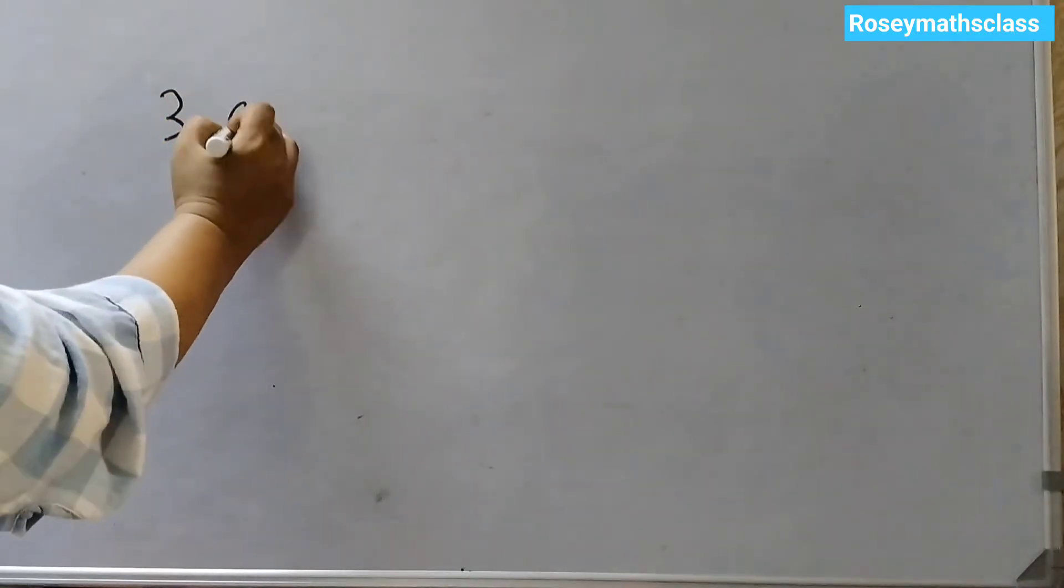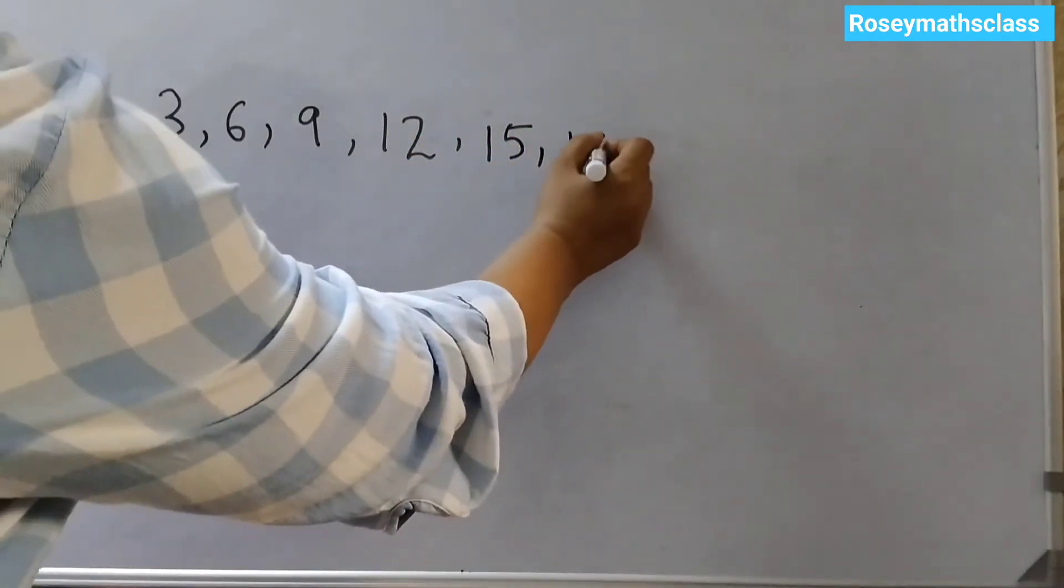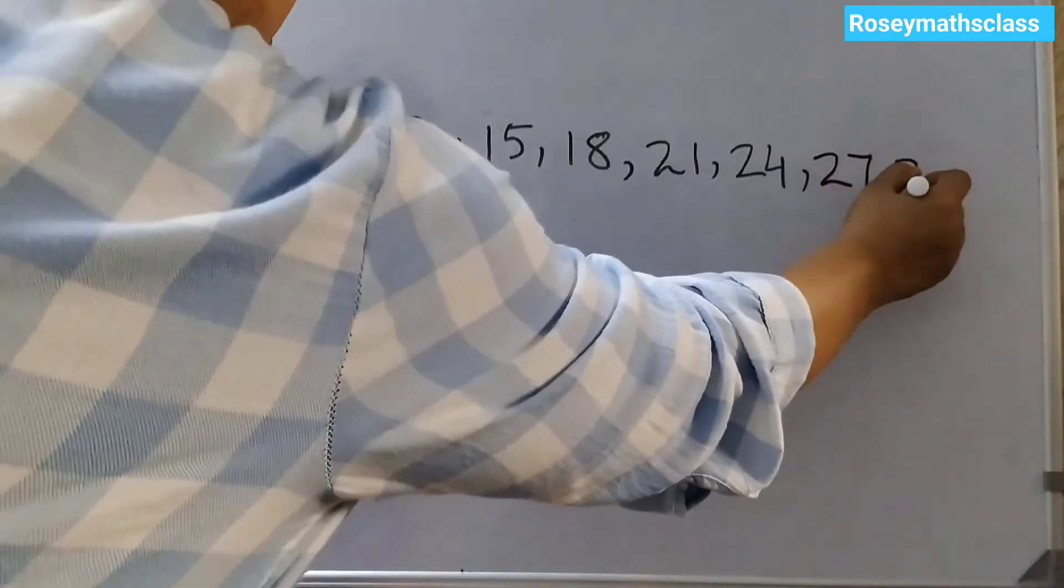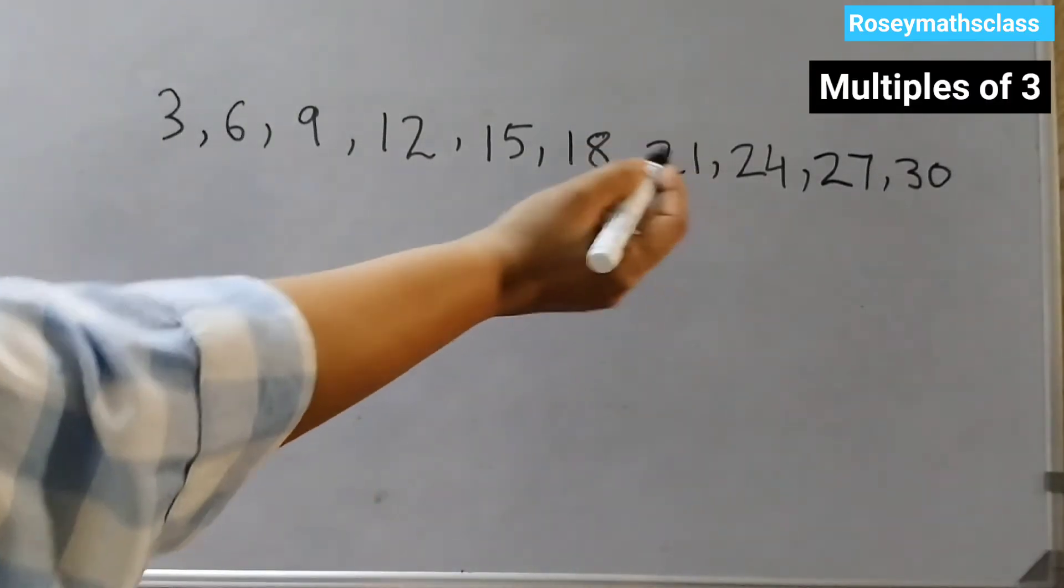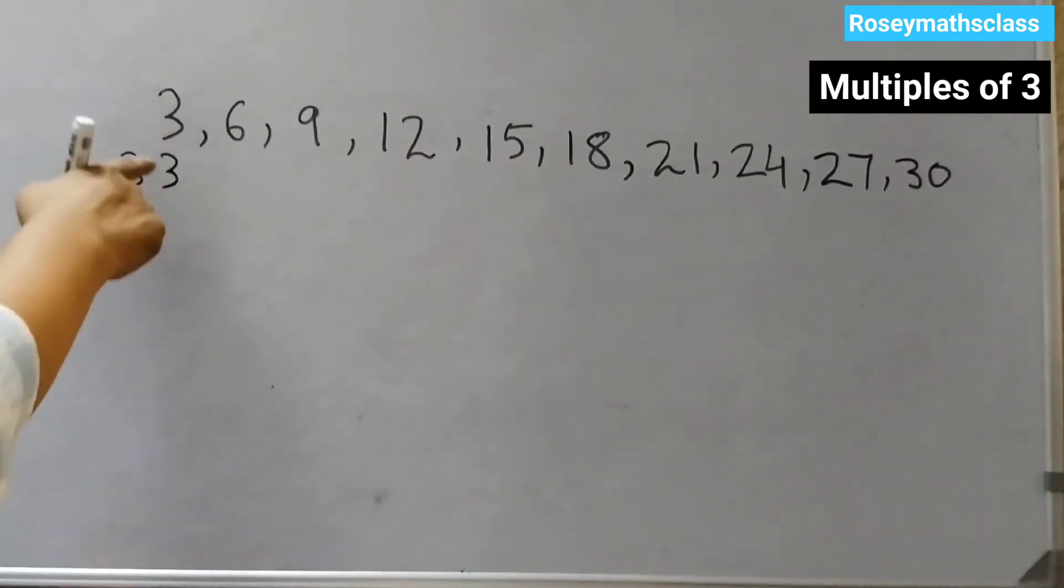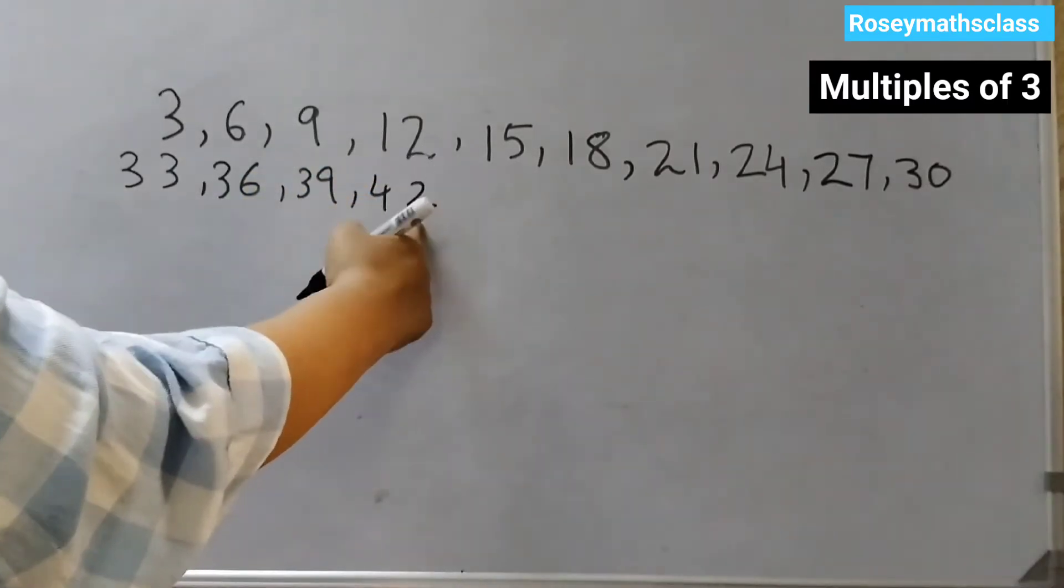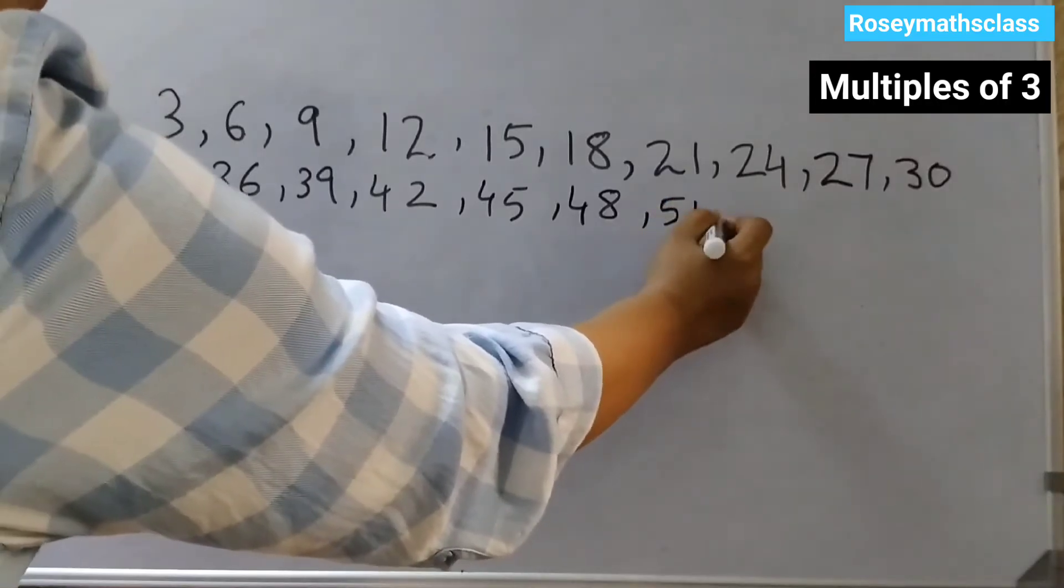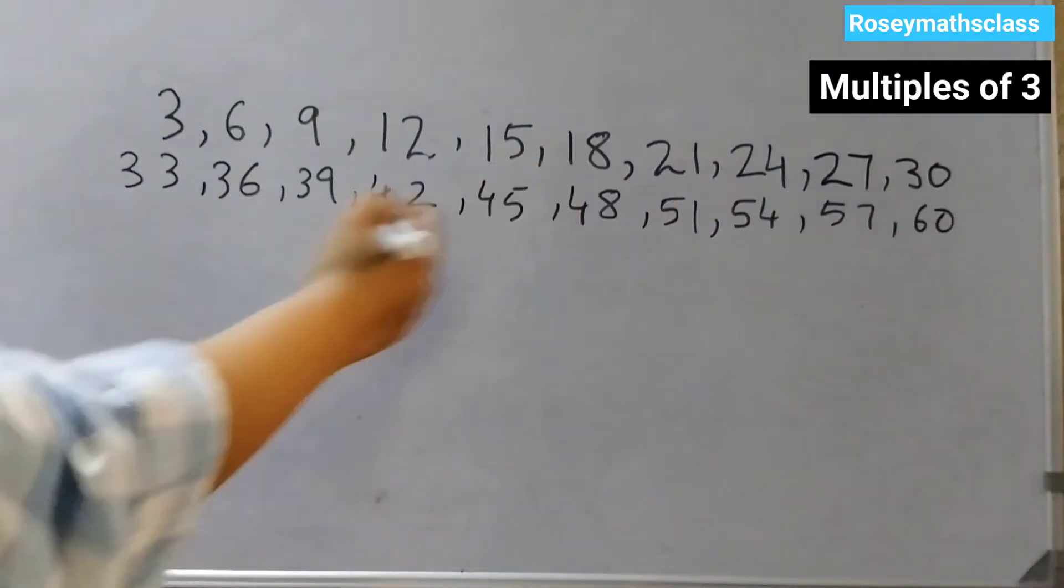First we will write the multiples of 3. Multiples of 3 are 3, 6, 9, 12, 15, 18, 21, 24, 27, and 30. Till 30 we have written the multiples. After 30 we can follow a pattern. 33, 36, 39, 42. The unit digit is same, this way it will be easy for you. 45, 48, 51, 54, 57, 60.